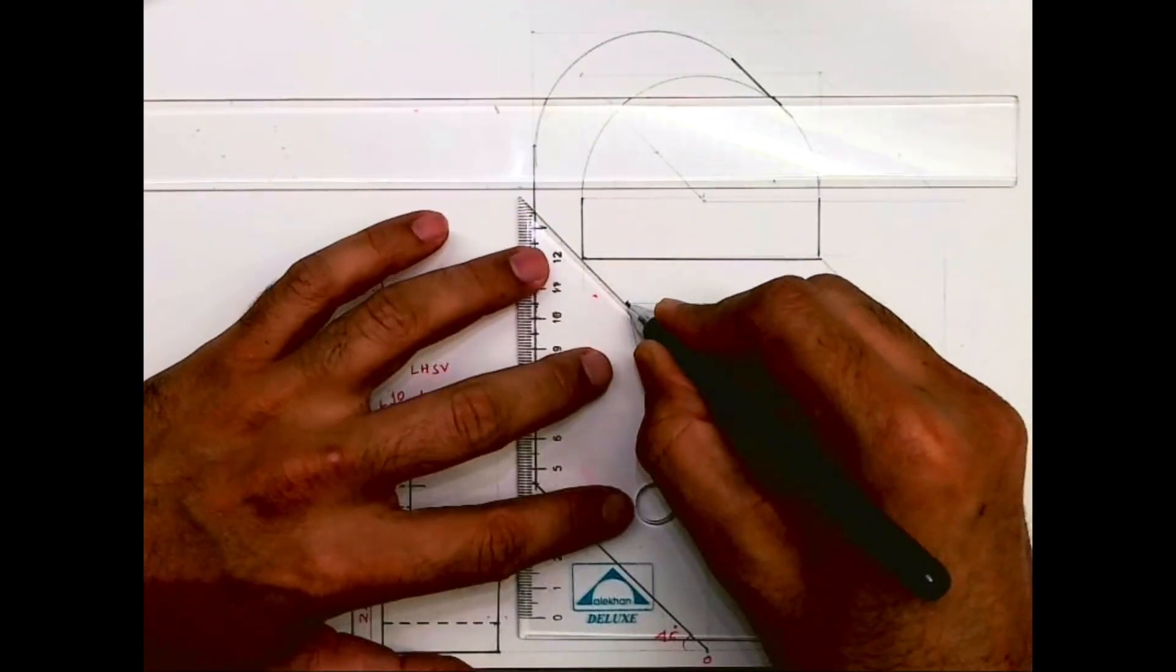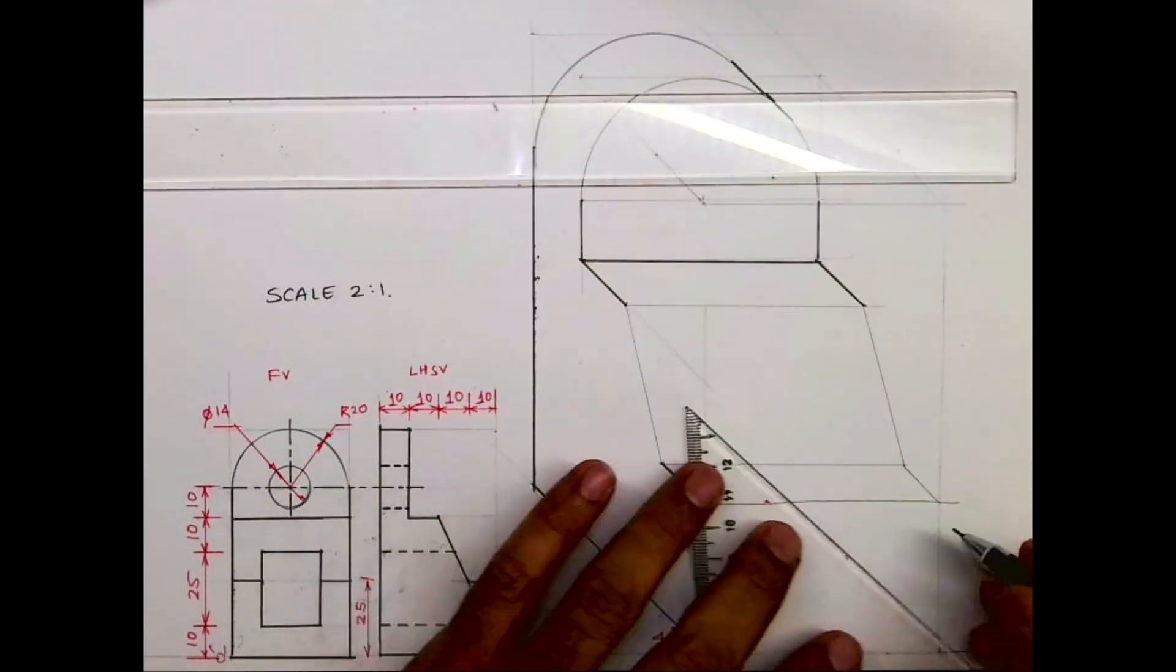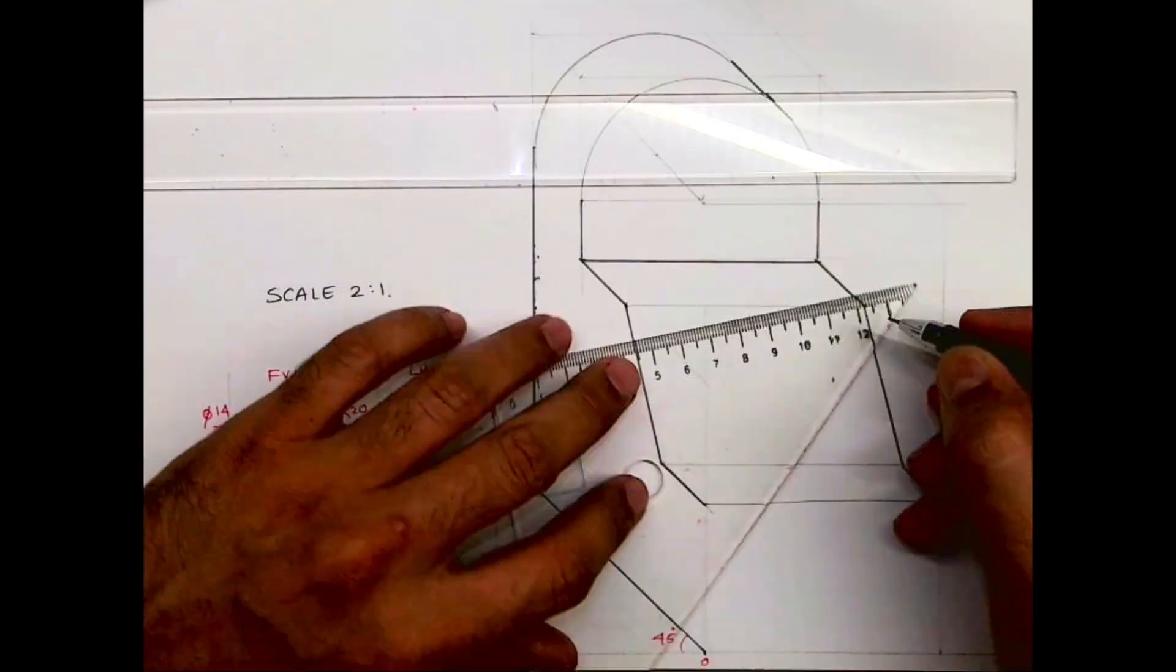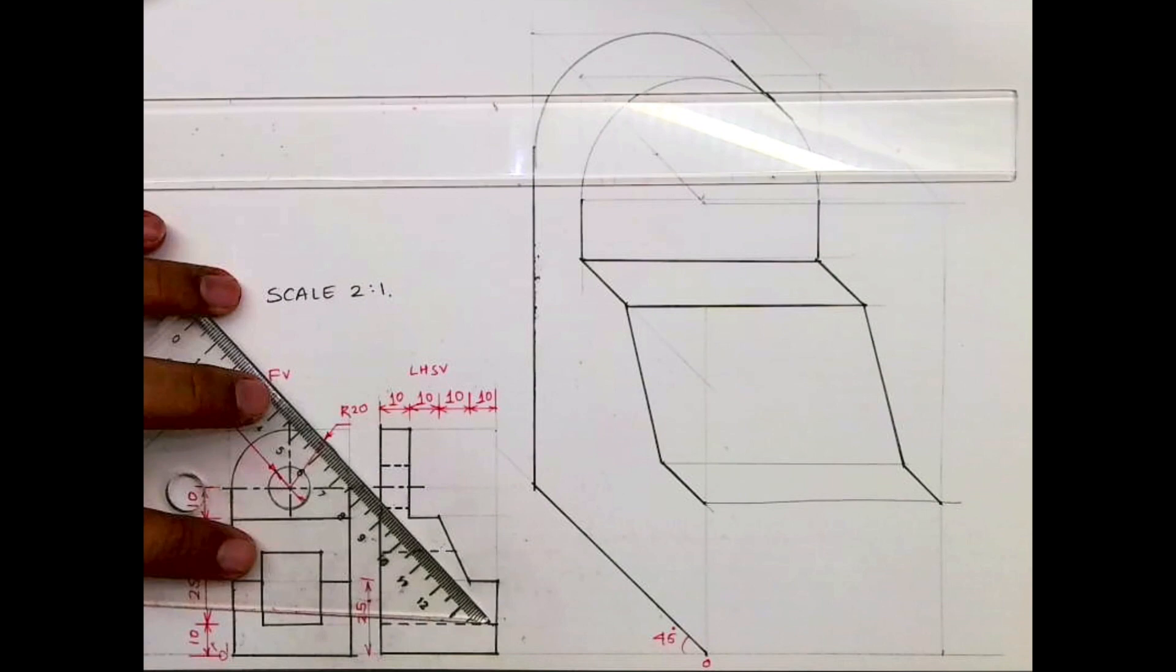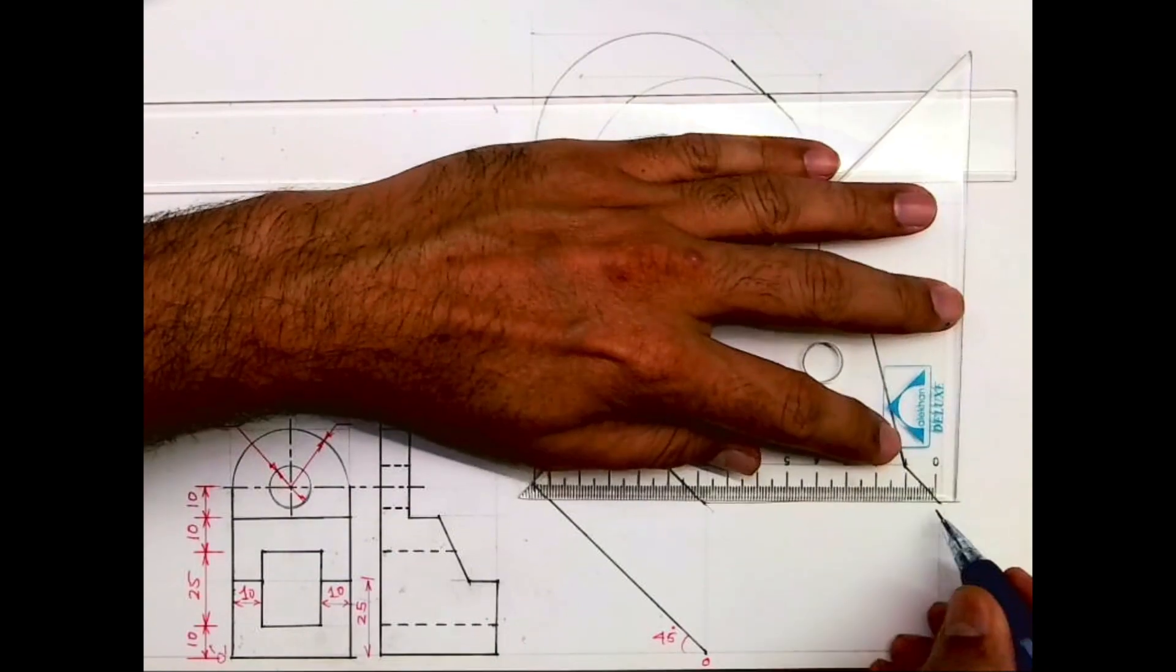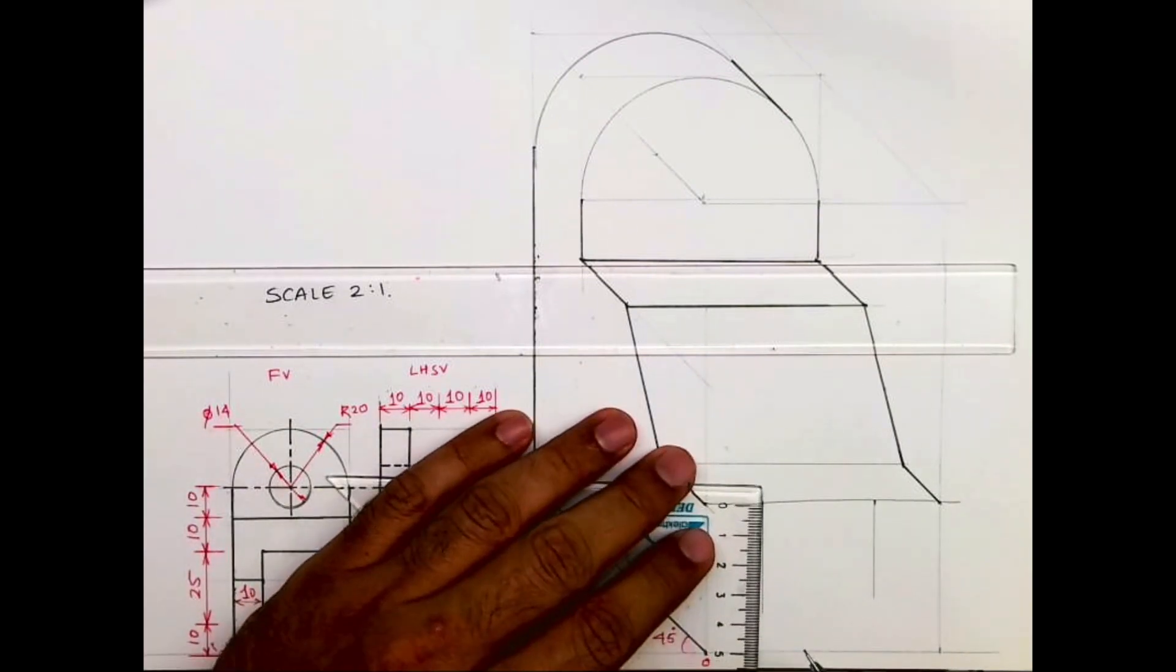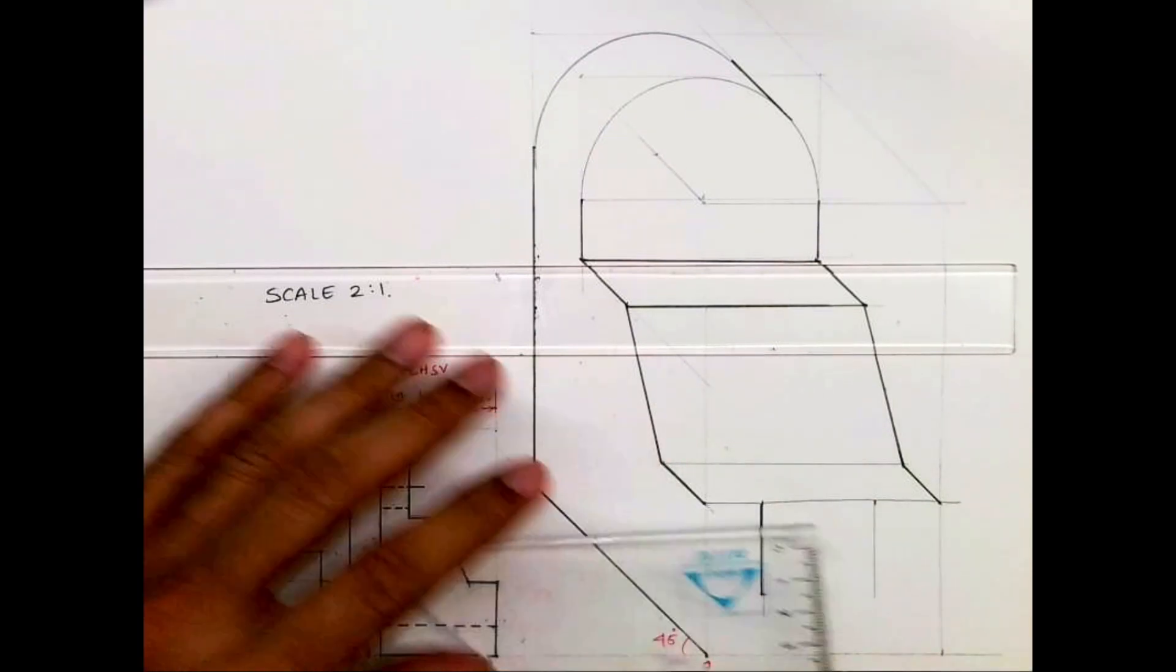After that you will join this. Now after drawing all these lines dark, then this is 10mm on both the sides, so we will mark 20 on both sides. From bottom we will take 10, so that is 20, and we will draw this part.